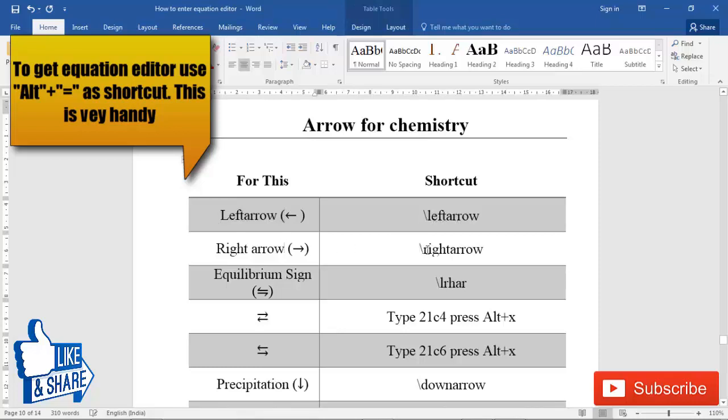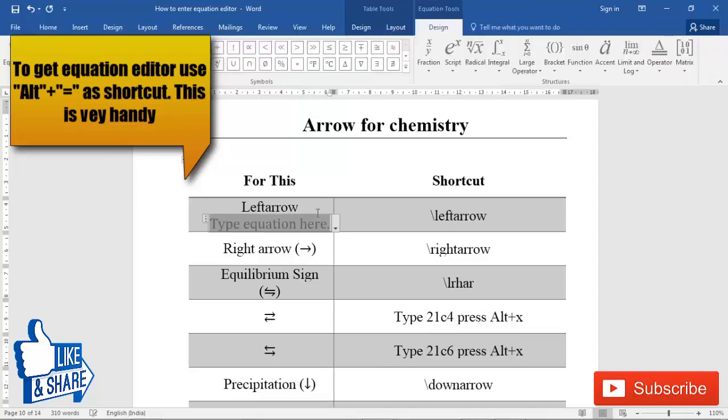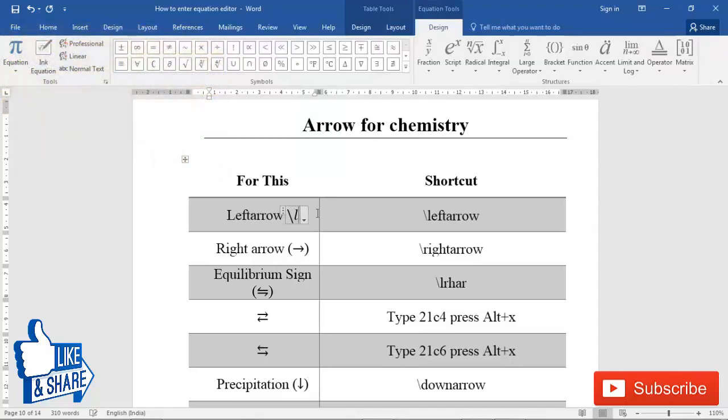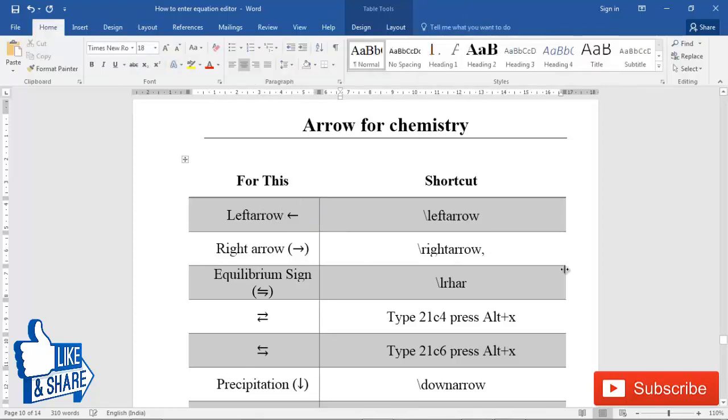For right arrows, the shortcut is backslash right arrow. I'll just type it for you once. You have to go inside equation editor, type backslash left arrow and press space. This is how I get left arrow.